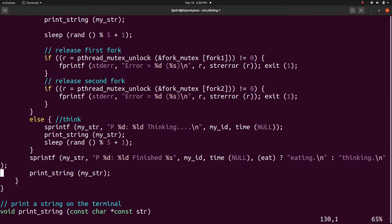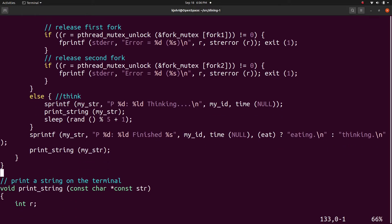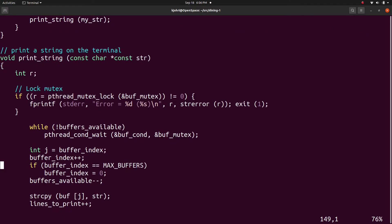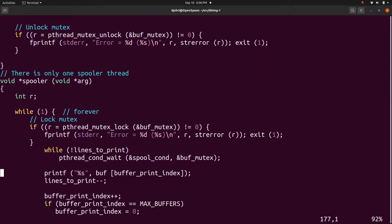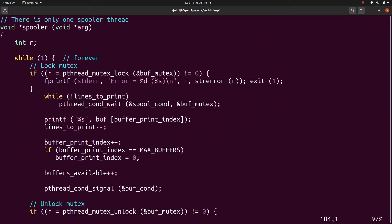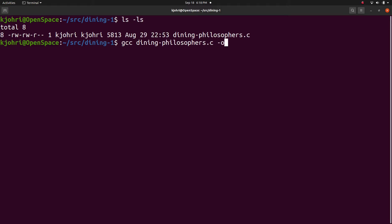So this is what happens for each of the five philosophers. And this is the function to print string called by the threads and this is the background spooler thread which prints messages. We can compile and run the Dining Philosophers program.